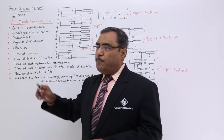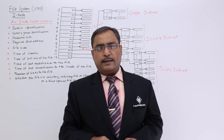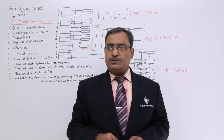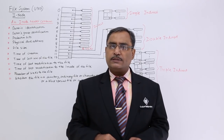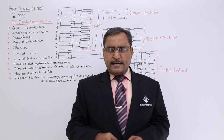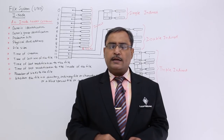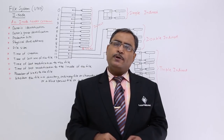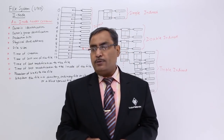The inode header also contains the owner's group identification. In Unix operating system, we first create groups and under groups we create multiple users. Each and every group will have its own dedicated unique group identification, and that information will also be kept in the header part of the inode.